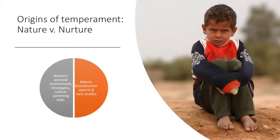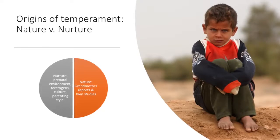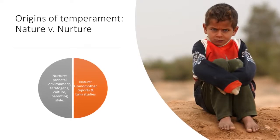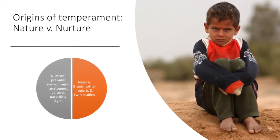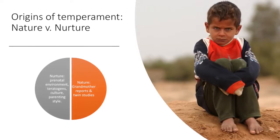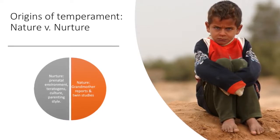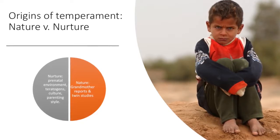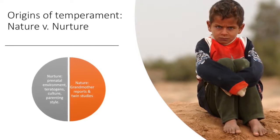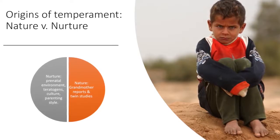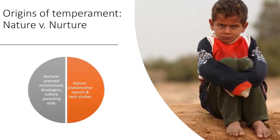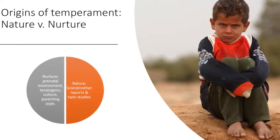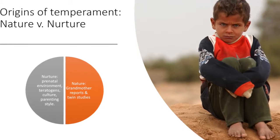Furthermore, the origins of temperament are debated between the classic nature versus nurture. Nature consists of grandmother reports and twin studies — these traits are said to be of biological origin and passed by heredity. Nurture, on the other hand, consists of influences from the prenatal environment, such as exposure to stress, teratogens, or if the baby was born premature. Also, the style of parenting and caregiving influences the child's temperament.